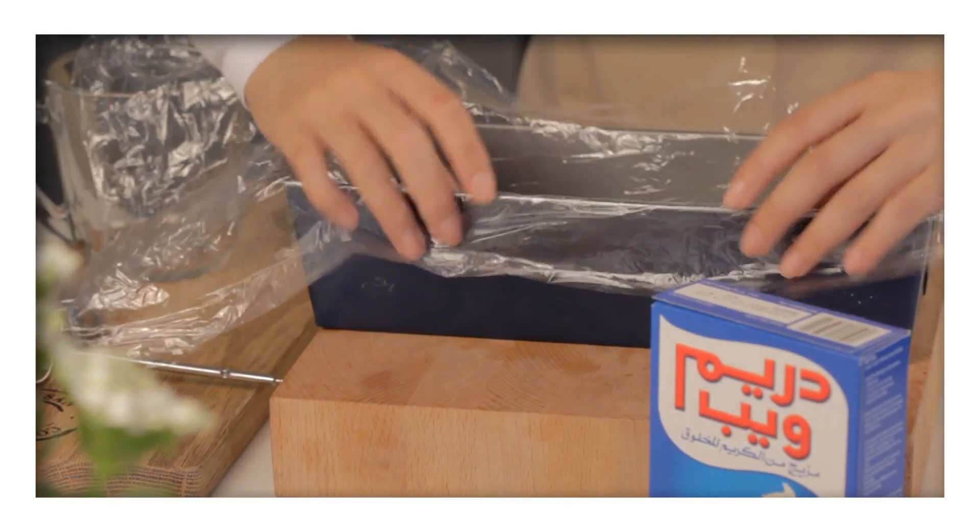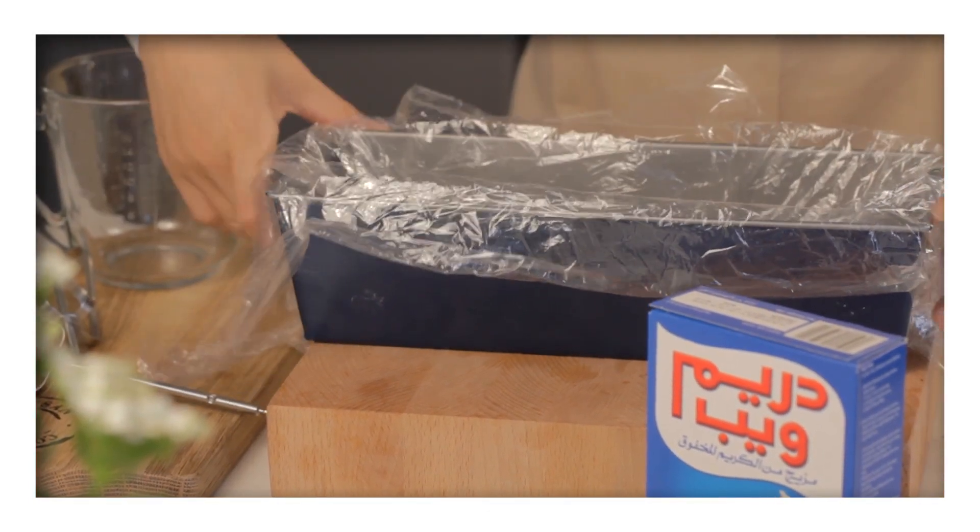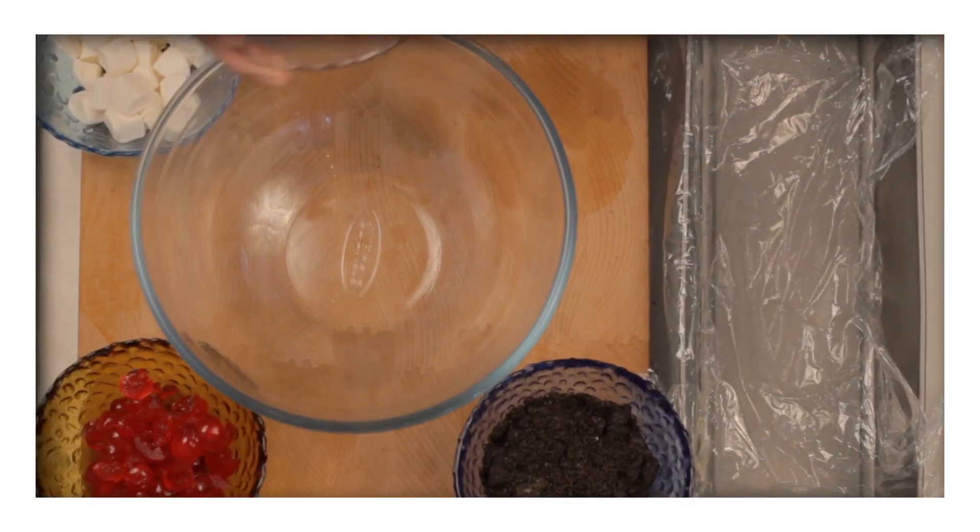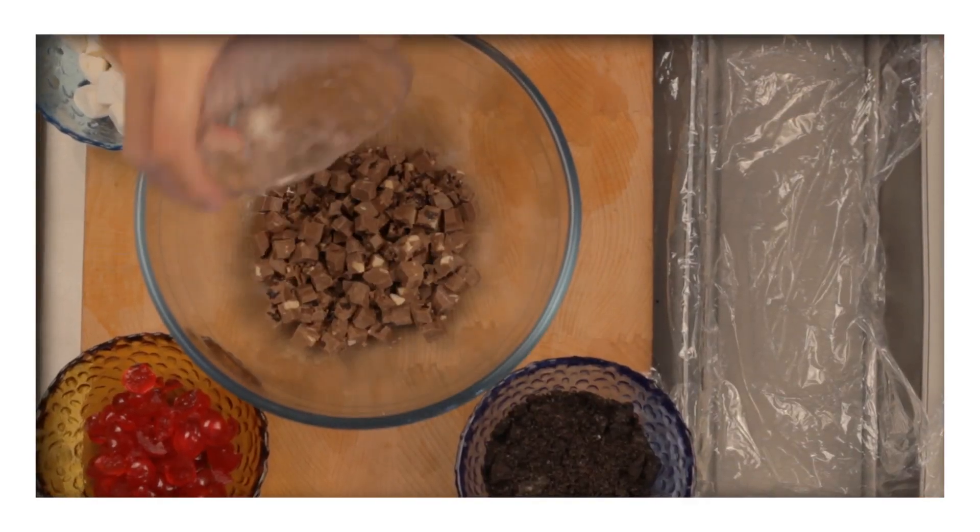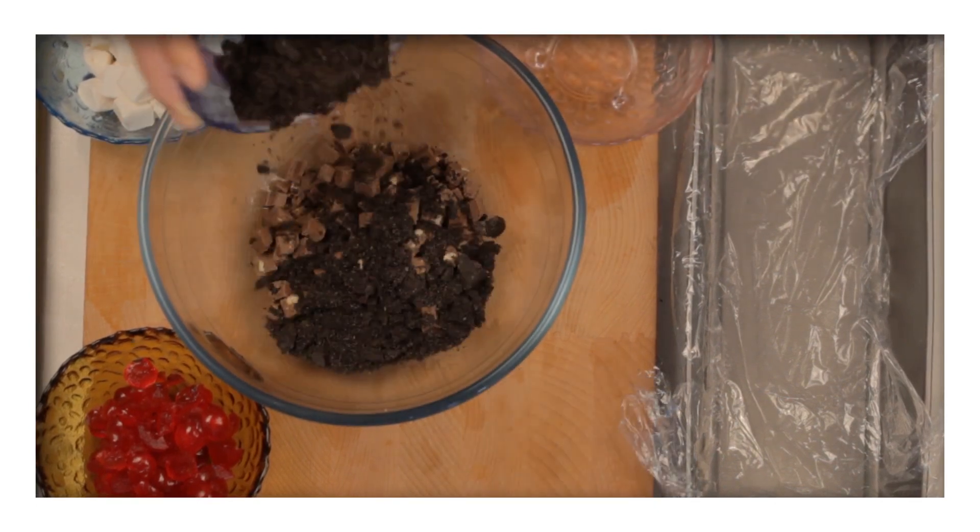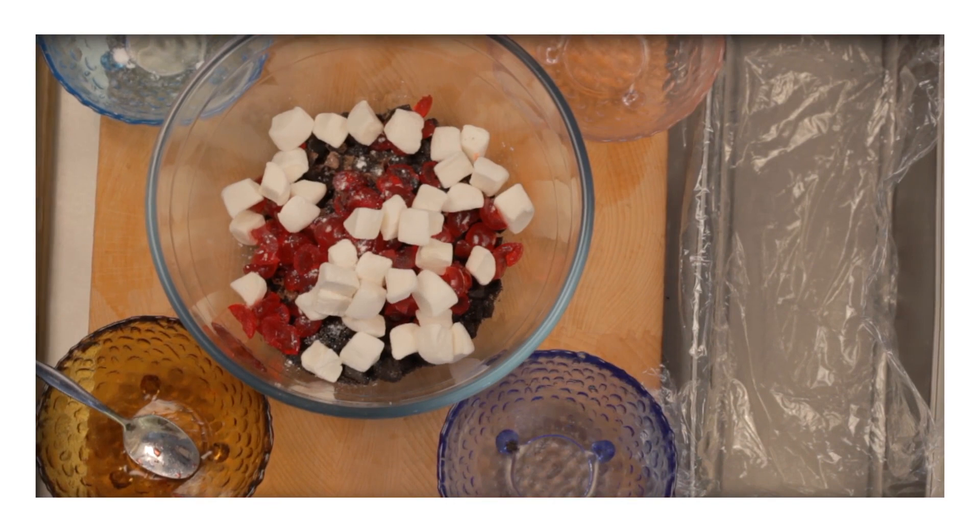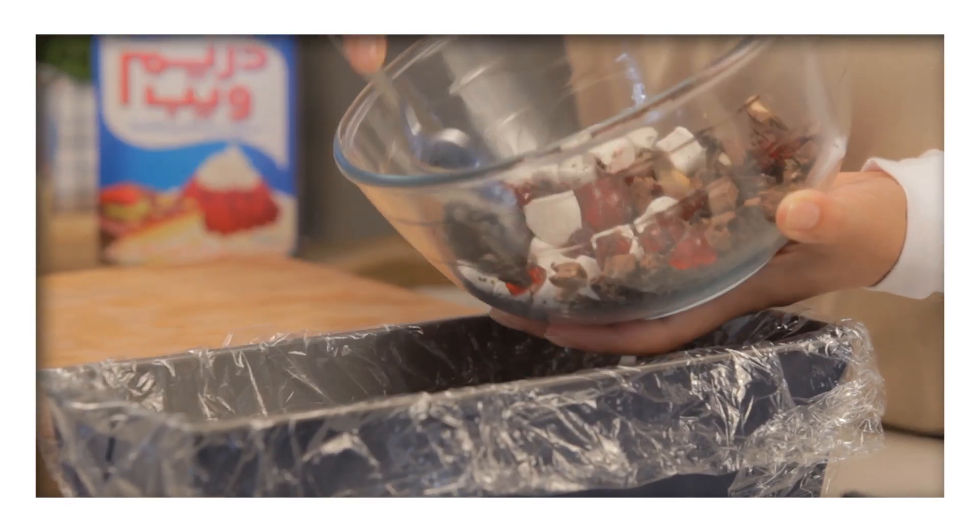To begin, line a loaf tin with two layers of plastic wrap and allow the sides to overhang. Then, in a bowl combine the chopped Cadbury Dairy Milk fruit and nut chocolate with a quarter cup of crushed Oreos, marshmallows and cherries. Then scatter these over the base of the lined loaf tin.